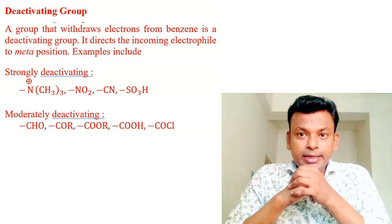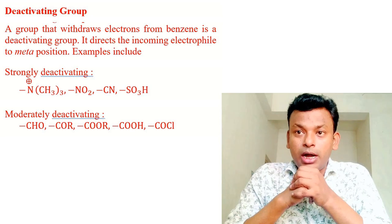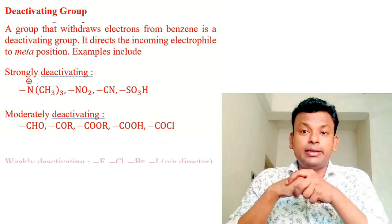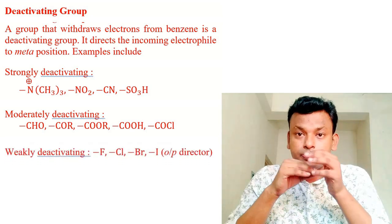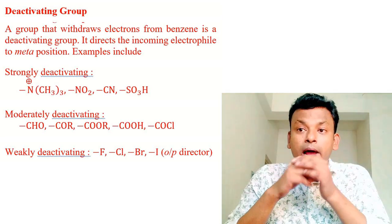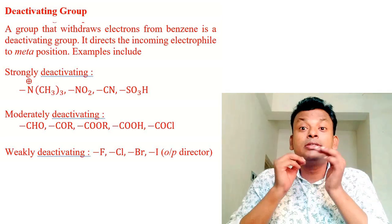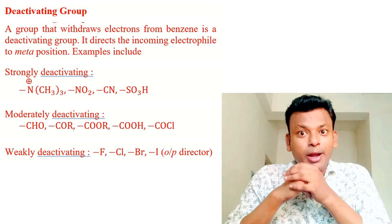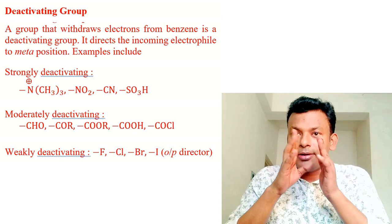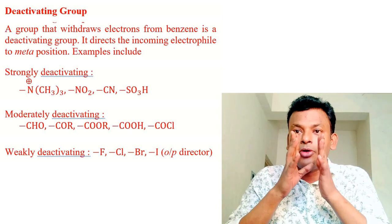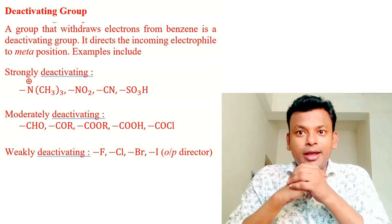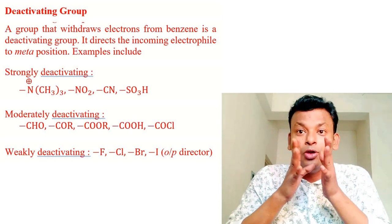Deactivating groups: a group that withdraws electrons from the benzene ring is a deactivating group. It directs the incoming electrophile to the meta position. Strongly deactivating groups include N⁺(CH₃)₃, NO₂, CN, SO₃H. Moderately deactivating groups include CHO, COR, COOR, COCl. Weakly deactivating groups (halogens: F, Cl, Br, I) are ortho-para directing despite being deactivating. Strongly and moderately deactivating groups are meta-directing.